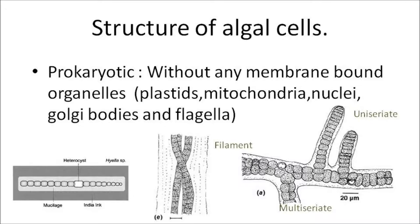A branched filament can be uniseriate — as you can see in the third image, one cell on top of the other but branched. And in the image labeled multicelliate, you actually see two rows of cells stacked on top of one another, so that is multiseriate. Apart from this, the cell moves by gliding movement with the help of slime secretion. Anabaena and Oscillatoria are some examples.